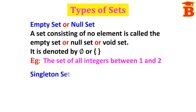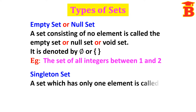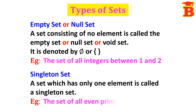Next, singleton set. In the name itself we have the word 'single,' meaning there is a single element. A set which has only one element is called a singleton set. For example, the set of all even prime numbers — the prime numbers are 2, 3, 5, 7, etc., and among these there is only one even number, which is 2. Since we have only one element, this is called a singleton set.